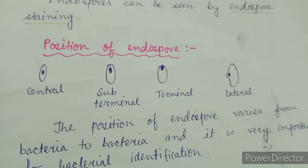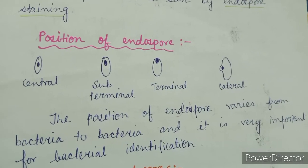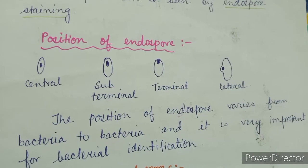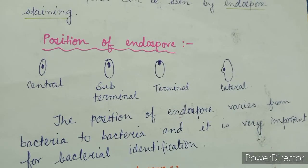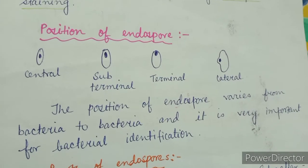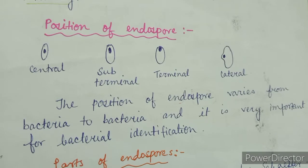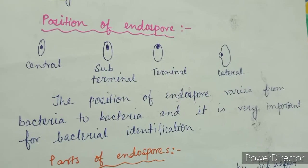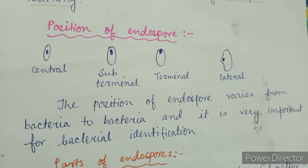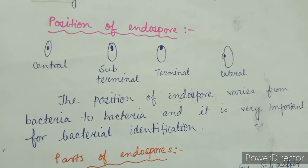The next point is the position of endospore. According to position, endospores can be divided into four types: central, subterminal, terminal, and lateral. The position of the endospore varies from bacteria to bacteria and is very important for bacterial identification.